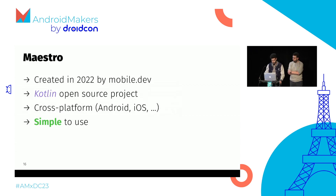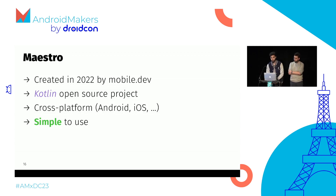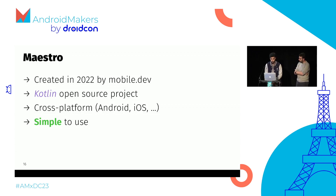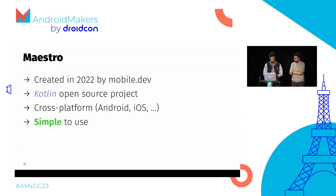So what is Maestro? Maestro is an end-to-end UI automation testing tool. It was created last year by the team from mobile.dev. It's an open-source project, so you can browse the code on their website and on GitHub. It's fully written in Kotlin, which is great for Android developers. Also very important: it's cross-platform. We want to write only one test that we can use on both our iOS and Android apps. You can use Maestro today to write tests for Android, iOS, Flutter, or React Native. And most importantly, as stated by mobile.dev, it's really simple to use.